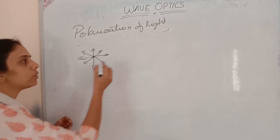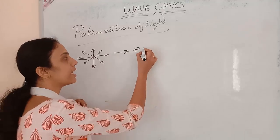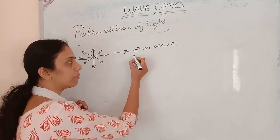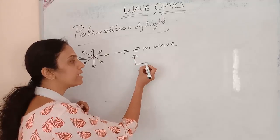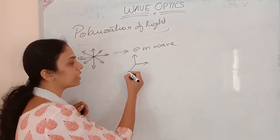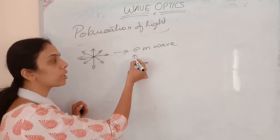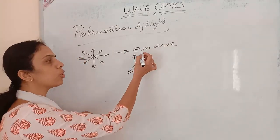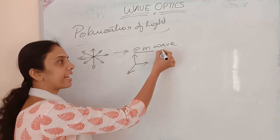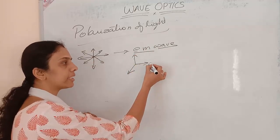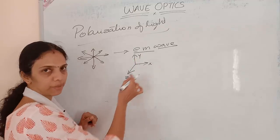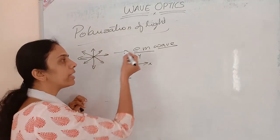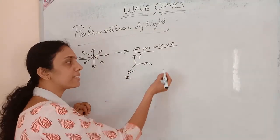We know that light is an electromagnetic wave. The electric field vector is in one direction, the magnetic field vector is in another direction, and the propagation is perpendicular to both the electric and magnetic vectors. So for this electromagnetic wave, the electric vector, magnetic vector, and propagation direction are all perpendicular to each other.